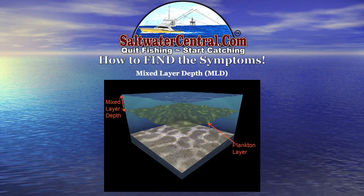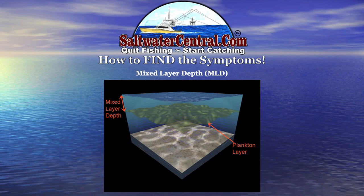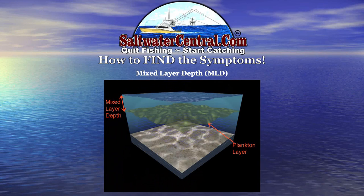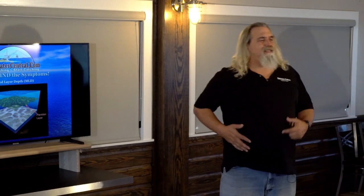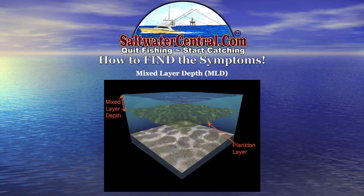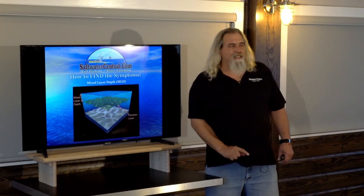Mixed layer depth. You give me mixed layer depth and I'll out-fish you with all the other data sets — SSTs, chlorophyll, all of it. That's a pretty bold statement. Mixed layer depth shows you the depth of the thermocline. If you tune your color scope just right, you can pick up the plankton layer. Ever been swimming in a freshwater lake? Up around your chest it's warm and toasty, get down around your belly button it gets cooler, and if you stick your toe way down there you punch through and the water turns cold. That's thermocline.